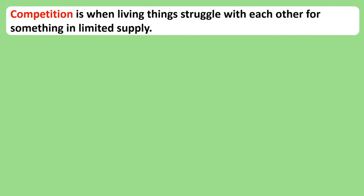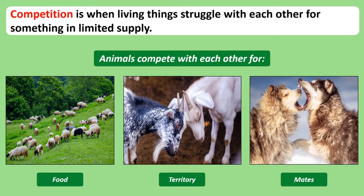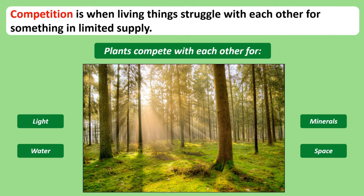Another interaction of living things in an ecosystem is competition. Competition is when living things struggle with each other for a resource that's in scarce supply. Animals compete with each other for the likes of food — you can see these sheep in the image competing with each other to eat as much grass as possible. Competition sometimes results in a physical battle between living things, such as battles for territory or mating rights. Plants also compete for light and space. Trees grow tall above other trees so that they can get more light, and they also compete for space so that their roots can spread out to absorb more water, minerals and nutrients than other plants.